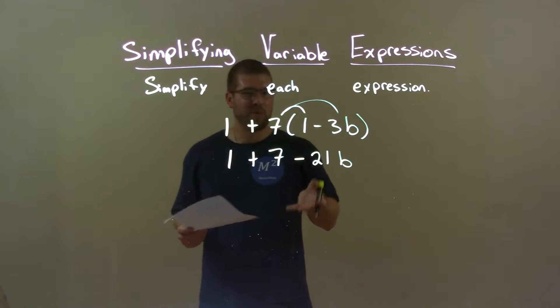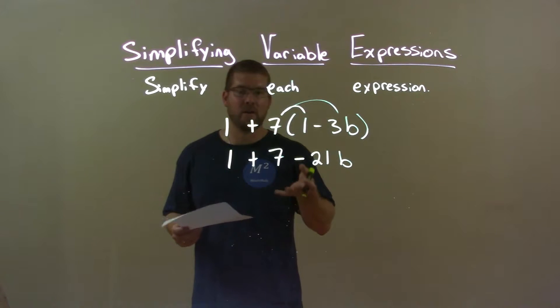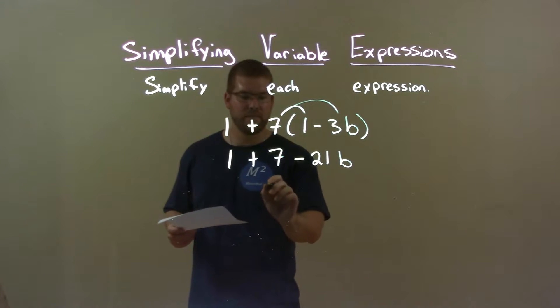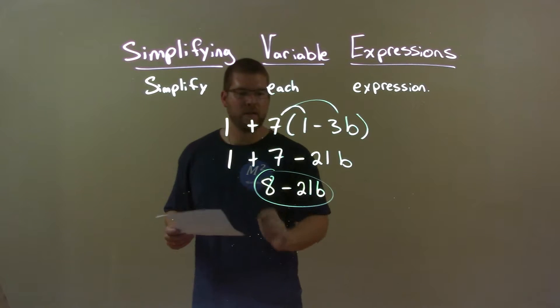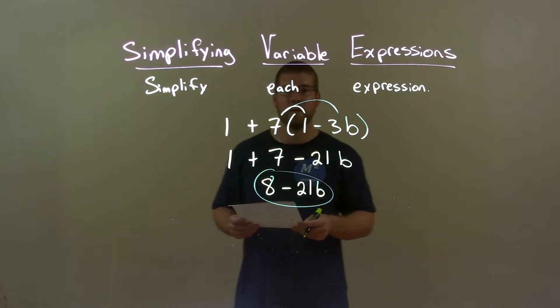Alright, now we're pretty much there we just have to combine our like terms. 1 plus 7 is 8, 8 minus 21b and so there we have our final answer 8 minus 21b.